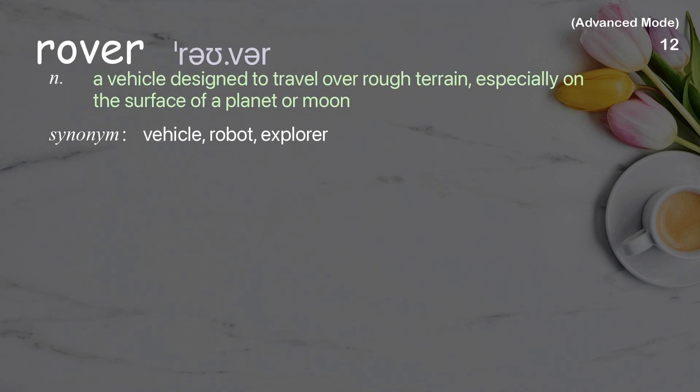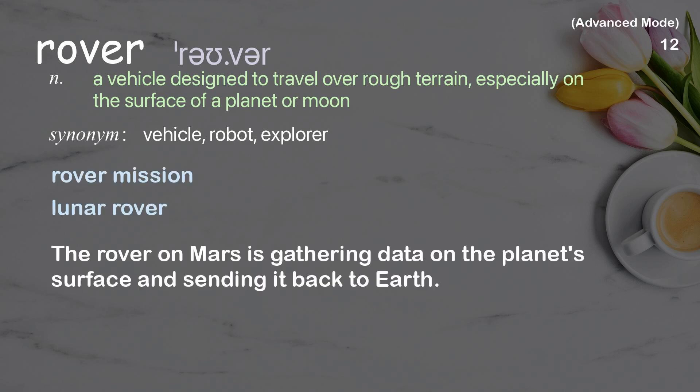Rover. A vehicle designed to travel over rough terrain, especially on the surface of a planet or moon. Example: The rover on Mars is gathering data on the planet's surface and sending it back to Earth.